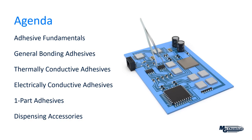On today's agenda, first we're going to look at adhesive fundamentals — the interactions between the surface itself and the adhesive, and how they work together to form that ideal bond. From there, we'll discuss our adhesive solutions, starting with general bonding adhesives, then moving into specialty types: thermally conductive, electrically conductive, and one-part products. Finally, we'll look at the dispensing accessories that work with some of these products.